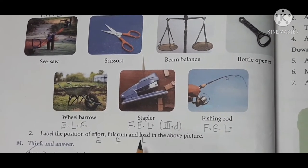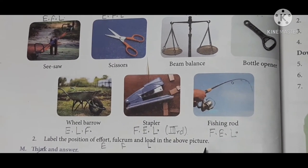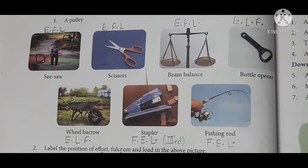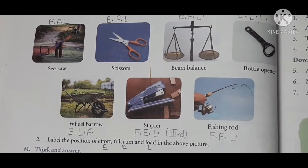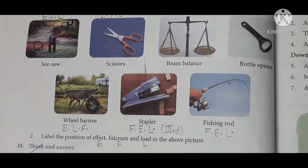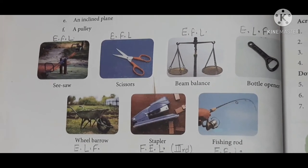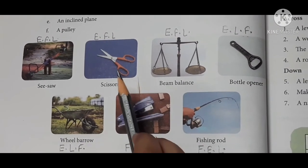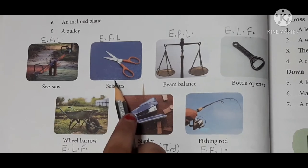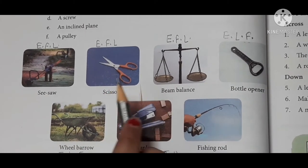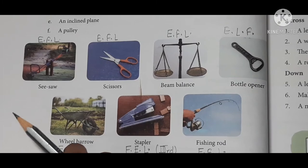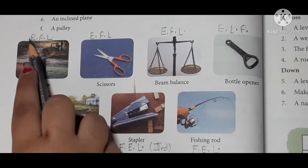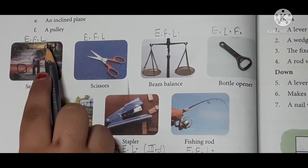Label the position of effort, fulcrum and load in the above picture. I will denote E for effort, F for fulcrum and L for load. The first three examples, seesaw, scissors and beam balance are the examples of first class lever. Their position is effort, fulcrum and load.